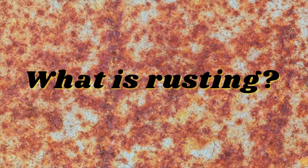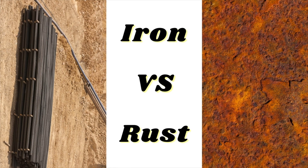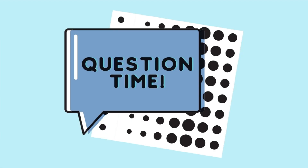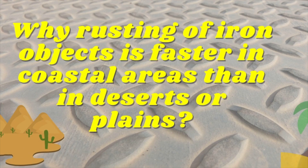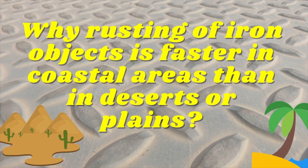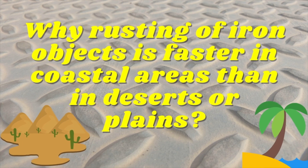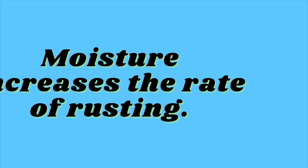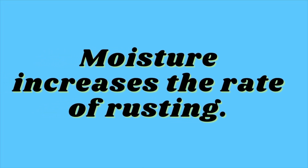We learned what rusting is, what the difference between iron and rust is, and so on. But there is one doubt that lingers: have you ever wondered why rusting of an iron object is faster in coastal areas than in deserts or plains? Rusting of iron in coastal areas is higher than in comparatively dry areas because the amount of moisture in air is more.